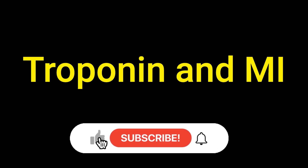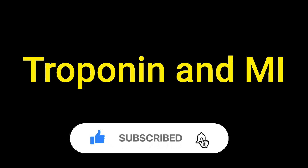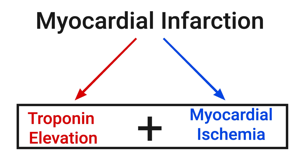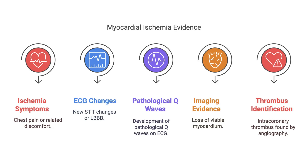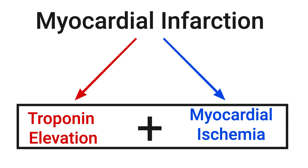Can we diagnose a myocardial infarction just with troponin elevation? Absolutely not. In addition to troponin elevation, we need evidence of myocardial ischemia: chest pain, dyspnea, ECG changes, wall motion abnormalities on imaging, or finding a thrombus during angiography. When we combine myocardial ischemia with troponin elevation, we can confirm a myocardial infarction.